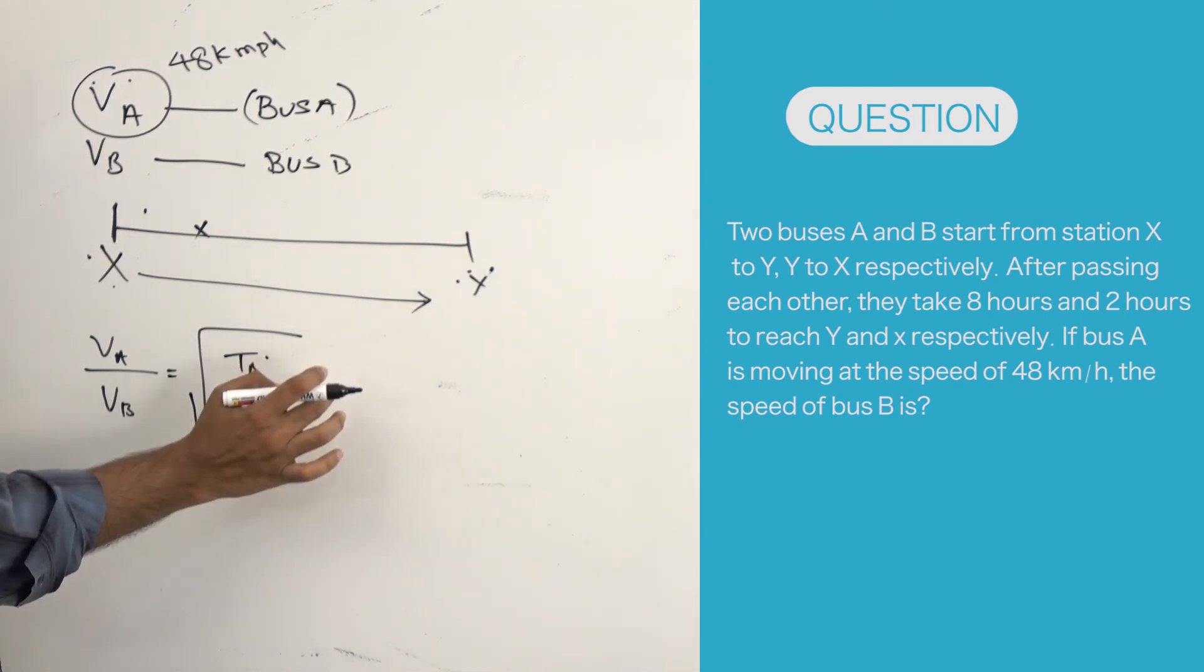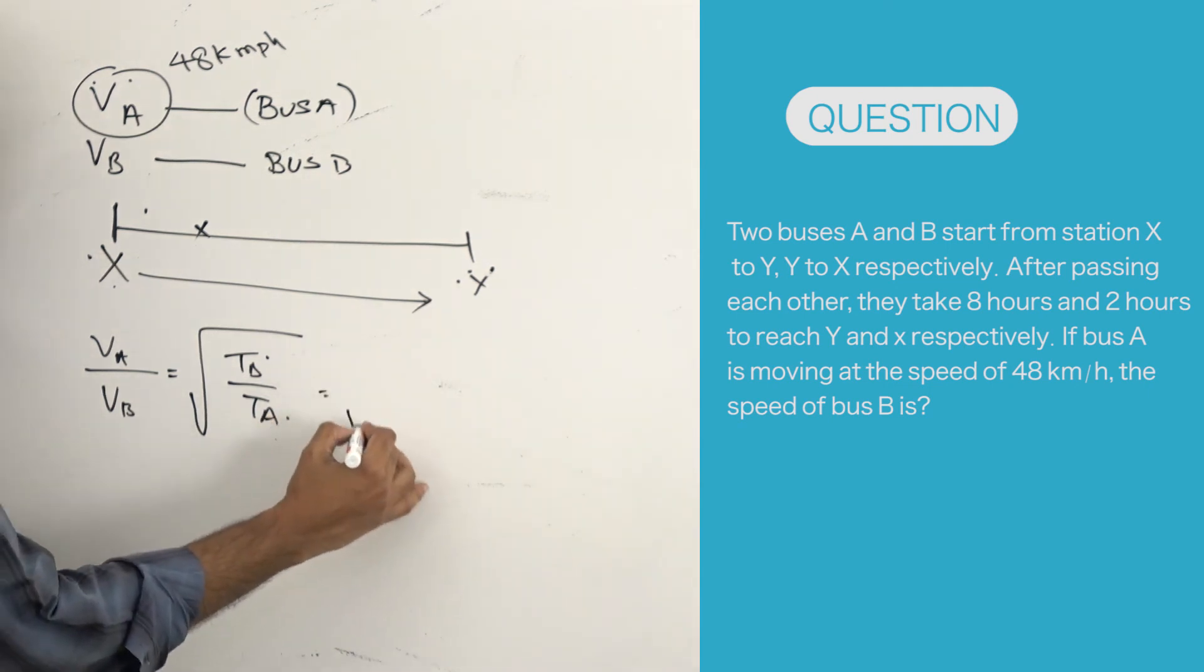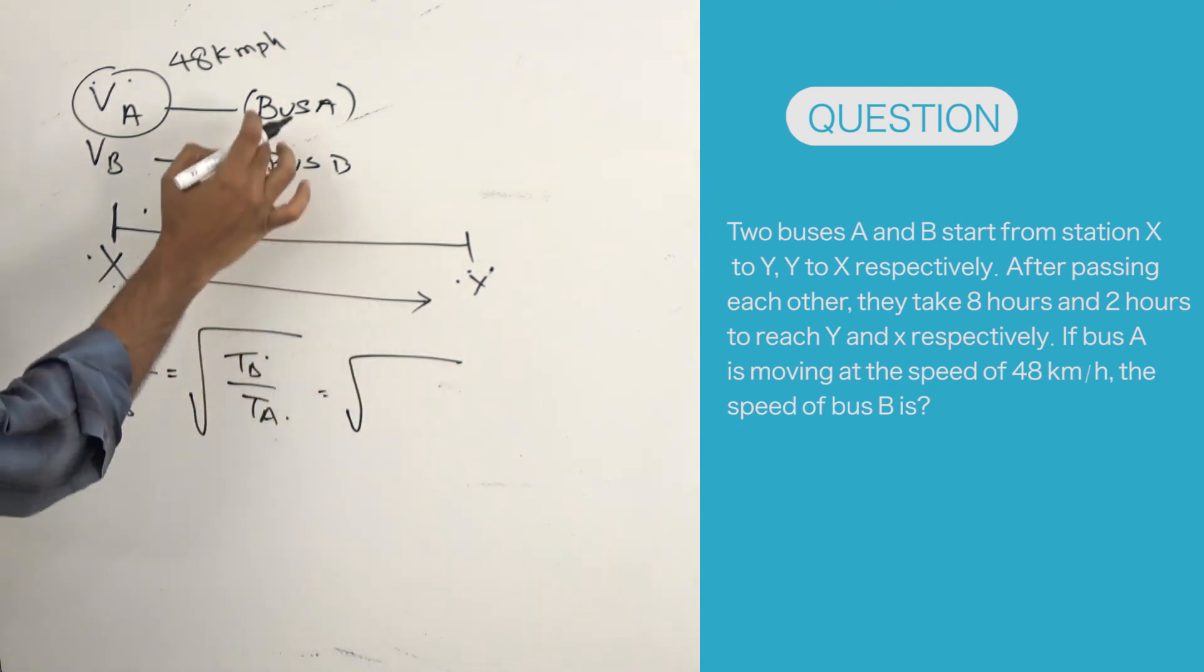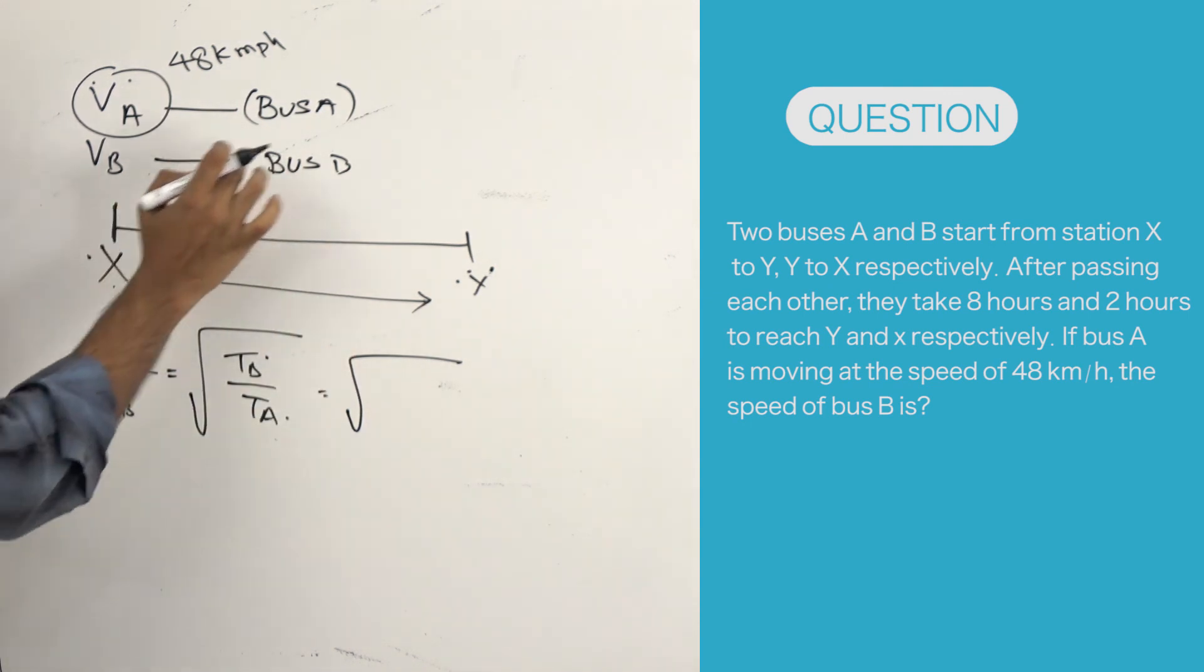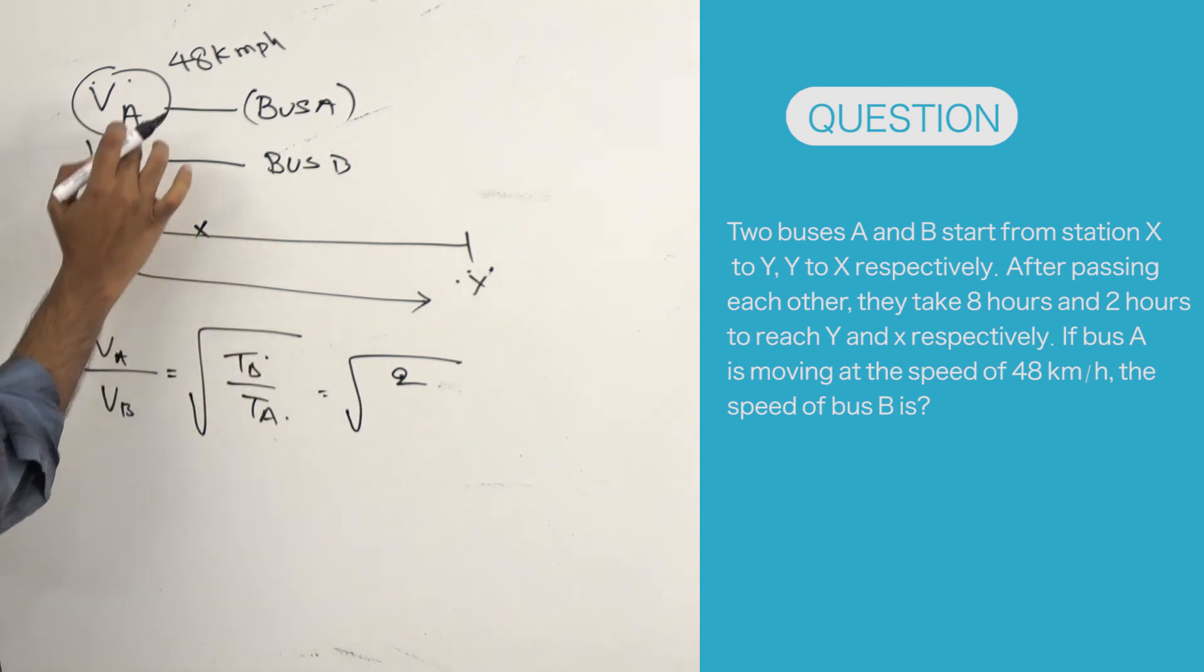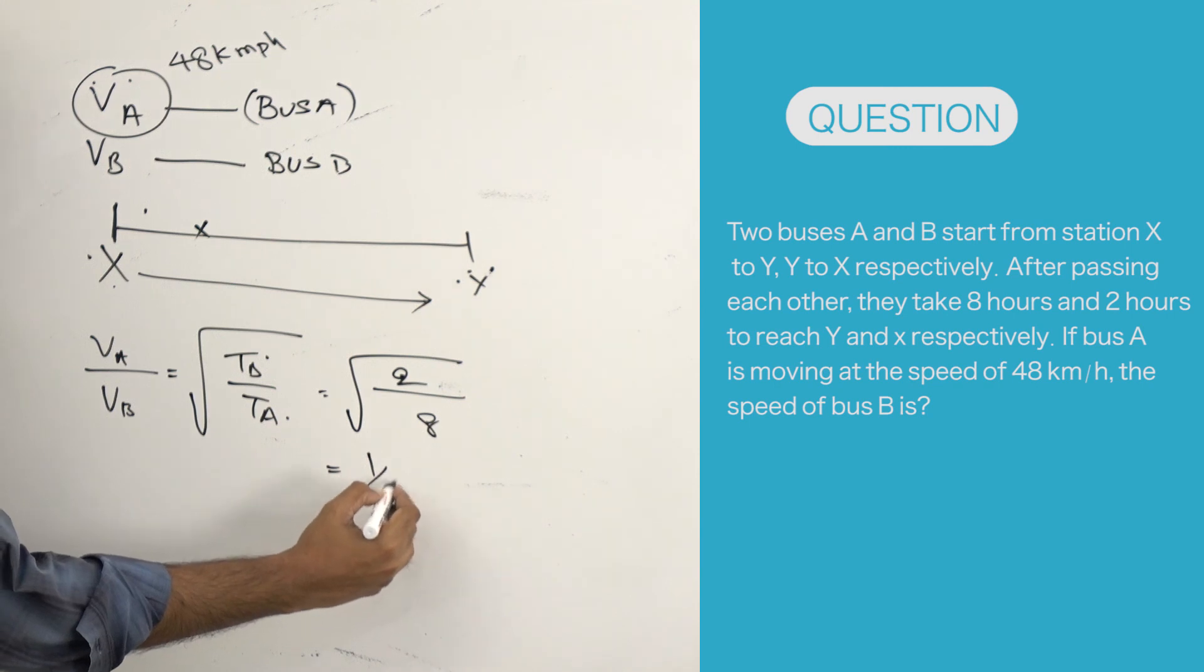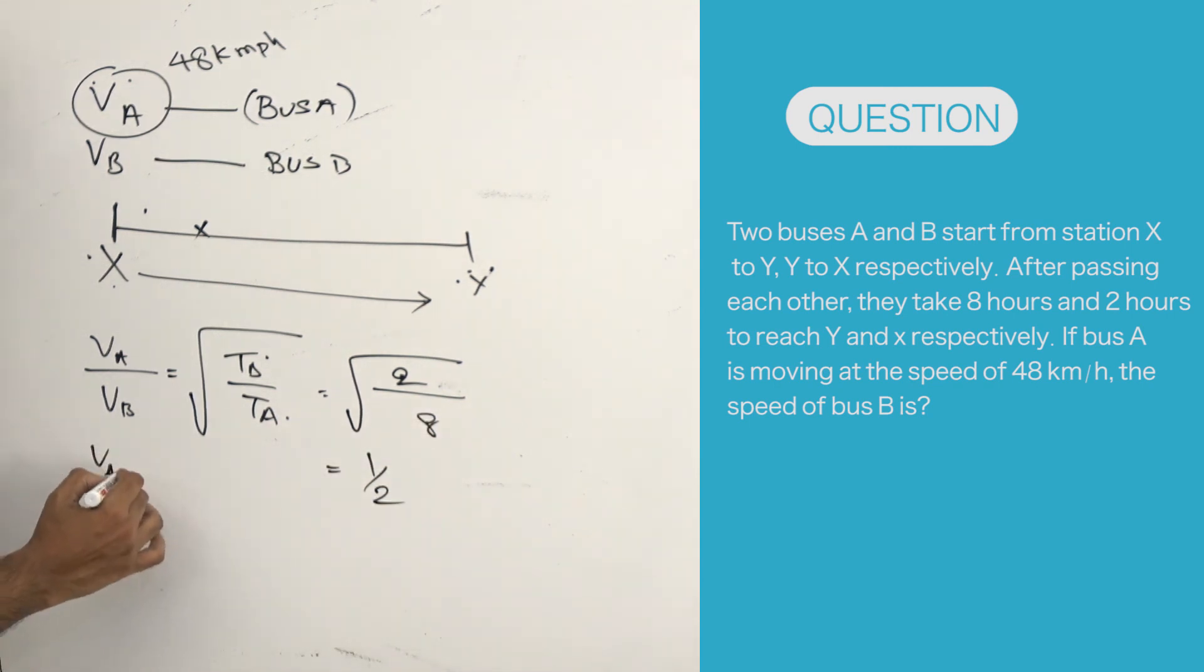T_B, the time taken for bus B to reach X, is 2 hours. The time taken by bus A to reach point Y is 8 hours. So we get the square root of 2/8, which is 1/4, which equals 1/2. So V_A/V_B equals 1/2. Already V_A is given as 48 kmph, which implies V_B is...